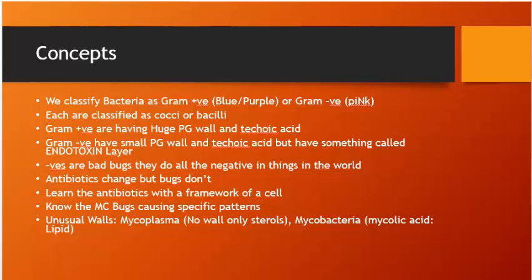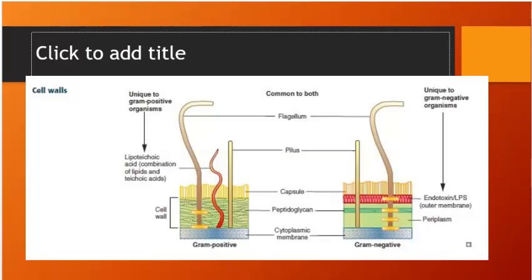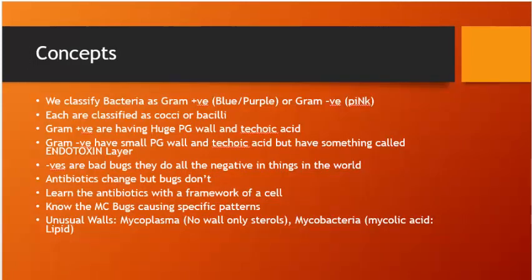Gram positives have a huge peptidoglycan wall and teichoic acid. You can see the peptidoglycan wall is very large in gram positives, along with flagellum, teichoic acid and pilus. Gram negatives have a very small peptidoglycan wall, but have an outer membrane containing endotoxin and lipopolysaccharide — unique to gram negative organisms and responsible for their virulence.